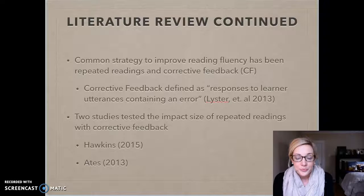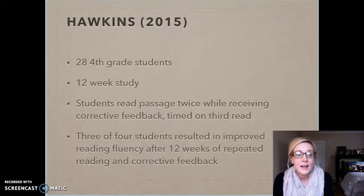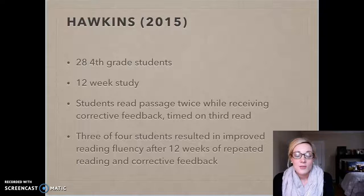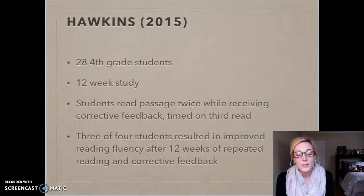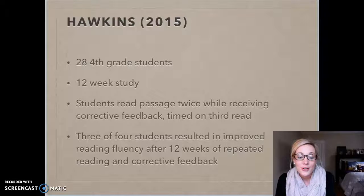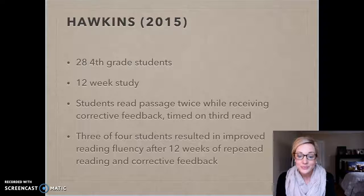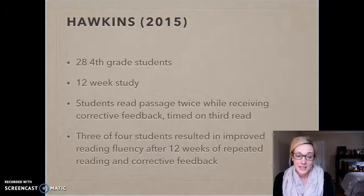The two main studies focused on the impact size of repeated reading and corrective feedback are by authors Hawkins and Eighth. The Hawkins study was conducted with 28 fourth grade students over the course of 12 weeks. These students all read the same fluency passage two times and received corrective feedback after their reads, then were timed and measured on their third read. The results showed that three of the four students improved their reading fluency after the 12 weeks, and 75% of those 28 fourth graders made gains, showing a high impact size.